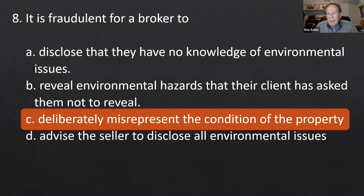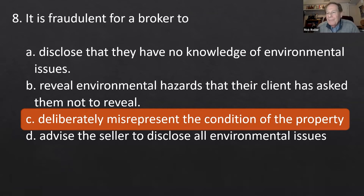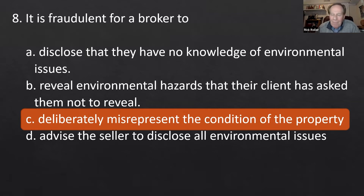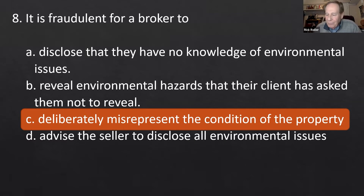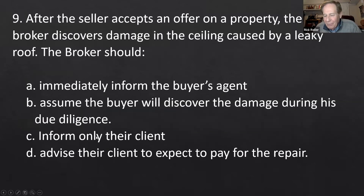Option C — deliberately misrepresenting the condition of the property — is the correct answer for what's fraudulent. Option D — advising the seller to disclose all environmental issues — is what you should do, so that's not fraudulent. We need to work with the cards we're dealt; fix problems like mold or disclose them and let buyers handle it, perhaps for a discounted price.